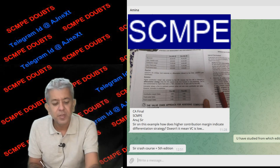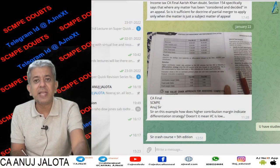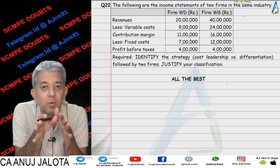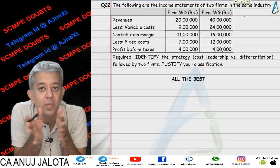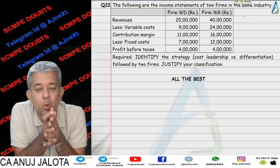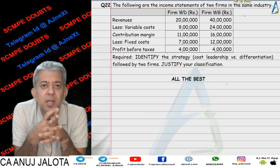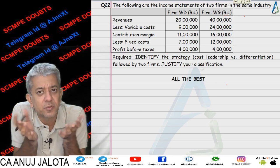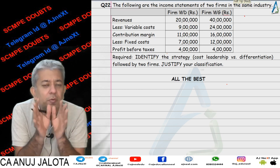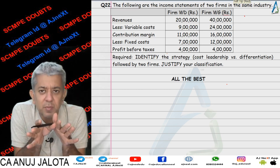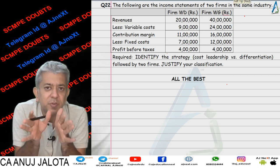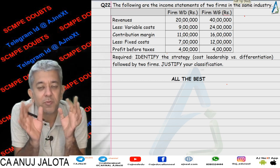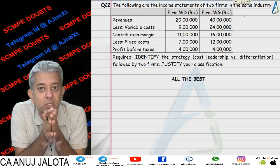Now honestly, it is slightly difficult to find out by seeing the cost data only, because different products will require different categories of cost. So from variable cost and fixed cost alone, you will not get conclusive evidence about which strategy a company follows.